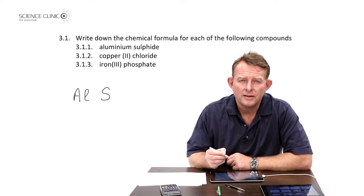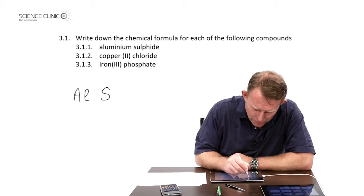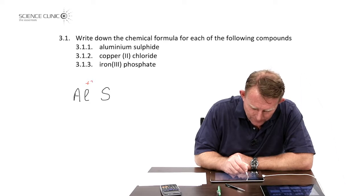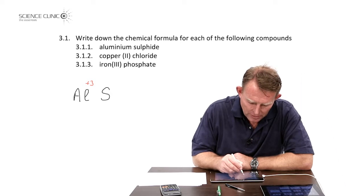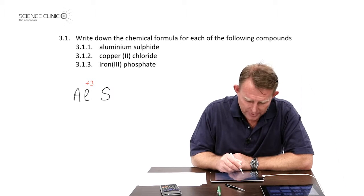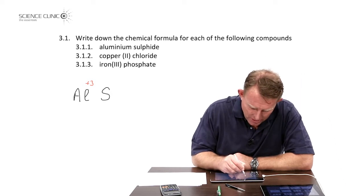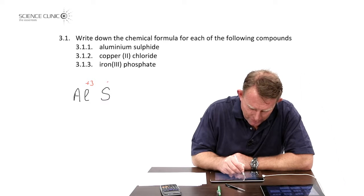Now the next step is to write down the charges. Aluminum we know occurs in group 3 and acquires a charge of plus 3 as an ion. Sulfur on the other hand is in group 6 and acquires a charge of minus 2.